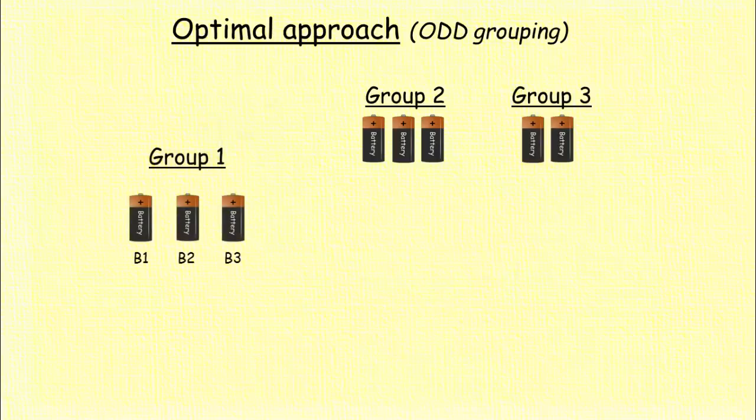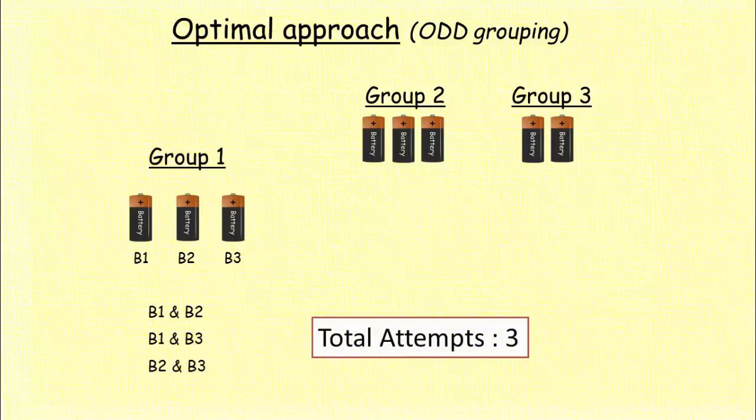In first group make three attempts with three combinations: B1-B2, B1-B3, and B2-B3. Worst case scenario is that none of the combinations lights up the torch. That can happen only if the group has either two discharged batteries or all three discharged batteries. But you must consider that it has two discharged batteries, so that the other discharged battery can be put in other group to make further worst case scenarios.